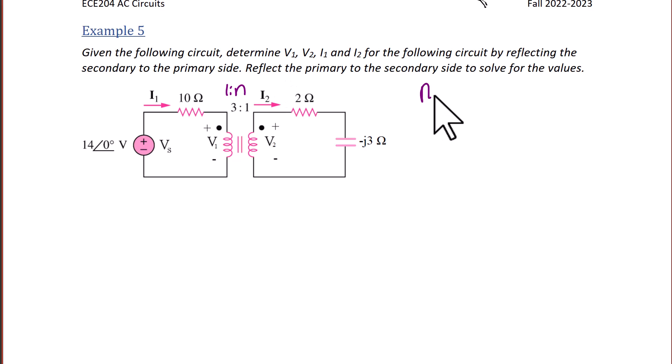The first thing we need to find is the turns ratio. The turns ratio is found by looking at N1 and N2, where N1 is equal to 3 and N2 is equal to 1. So we get that N is equal to 1 third. Since N is less than 1, we would say that this is a step down transformer.